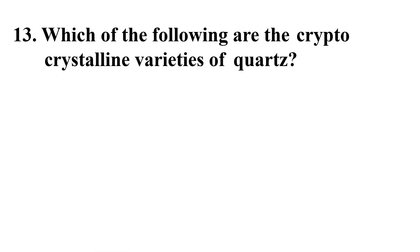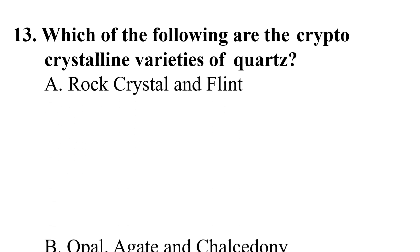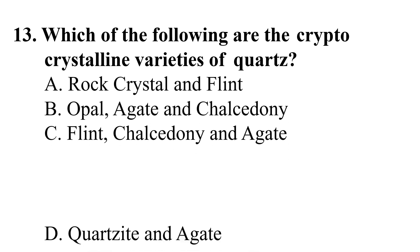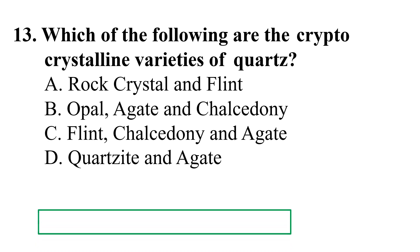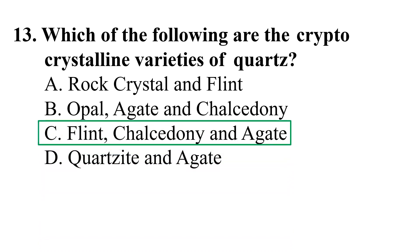Question 13: Which are the cryptocrystalline varieties of quartz? Choices are: A) Rock crystal and Flint, B) Opal, Agate and Chalcedony, C) Flint, Chalcedony and Agate, D) Quartzite and Agate. The correct answer is C) Flint, Chalcedony and Agate.